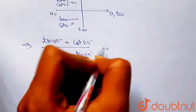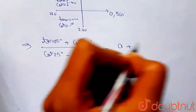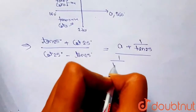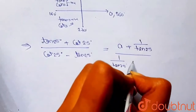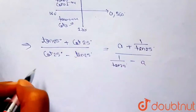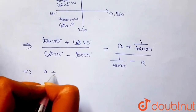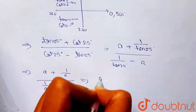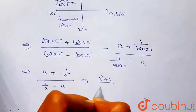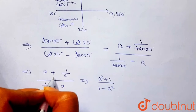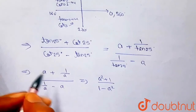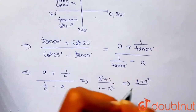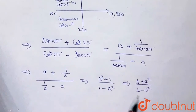Since tan(25°) = a, and cot(25°) = 1/a, we have: numerator = a + 1/a, denominator = 1/a - a. Simplifying: (a² + 1)/a divided by (1 - a²)/a. The a's cancel, giving (a² + 1) / (1 - a²), which can also be written as (1 + a²) / (1 - a²).